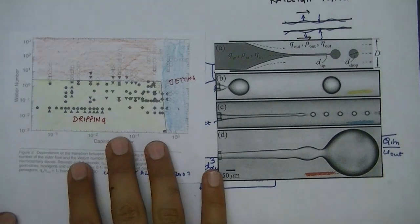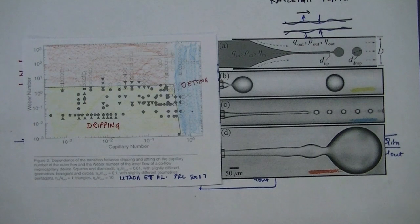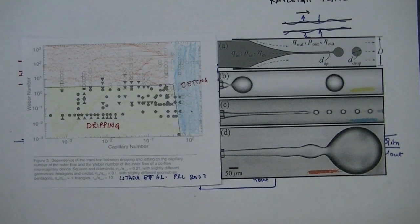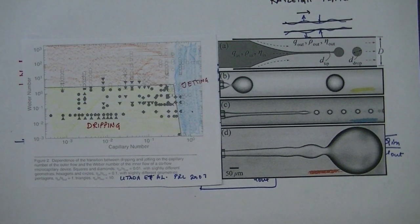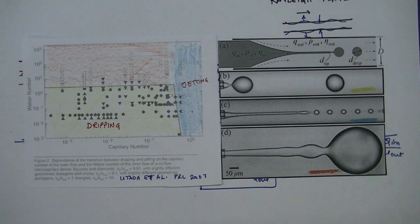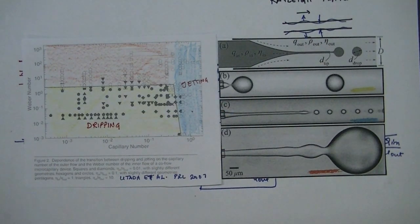Although we have discussed droplet formation in a co-flow device, similar dripping and jetting regimes also occur in other microfluidic devices for droplet generation, such as a T-junction microfluidic device, and that is what we are going to discuss in the next lecture. Overall, the mechanism of dripping and jetting is similar in the T-junction device as well.